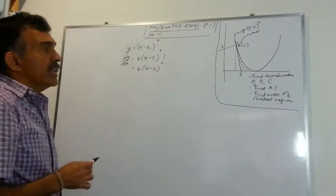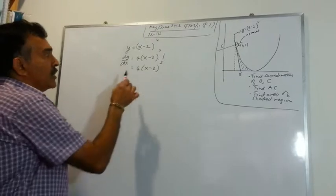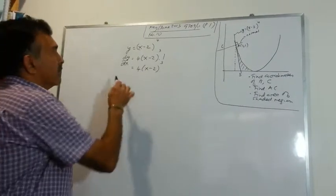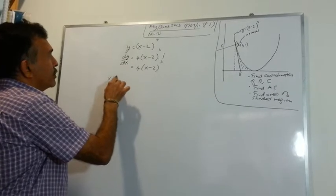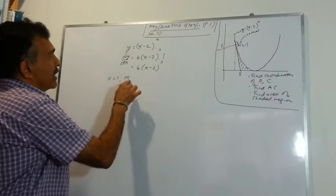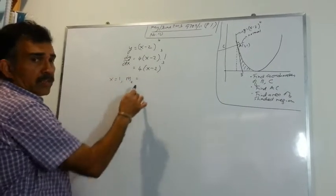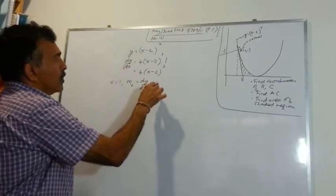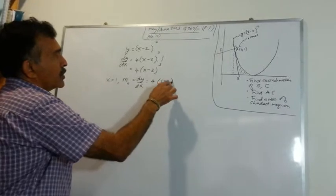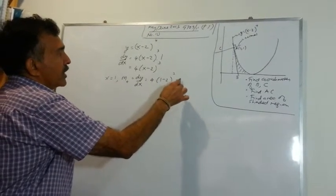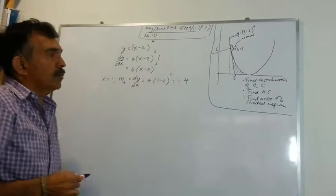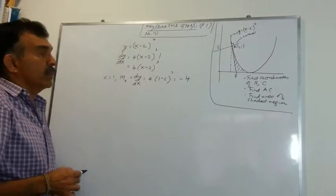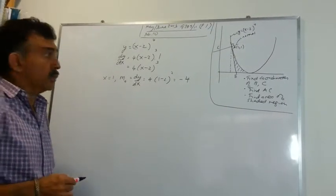To write the equation of the tangent at A, we need the value of dy/dx at x equals 1. So when x equals 1, let me use mt for the gradient of the tangent. The value of dy/dx will be 4 times (1 minus 2) raised to the power of 3. 1 minus 2 is minus 1, raised to the power of 3 gives minus 1, times 4 gives minus 4.